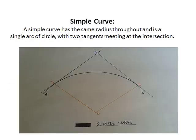First of all, we have a simple curve. A simple curve has the same radius throughout and is a single arc of a circle with two tangents meeting at the intersection. This is a simple curve which has a constant radius.